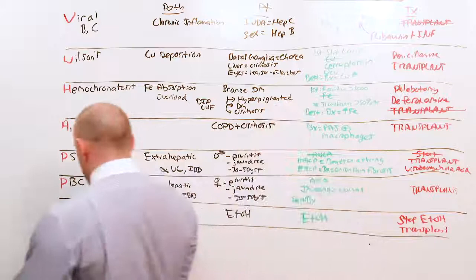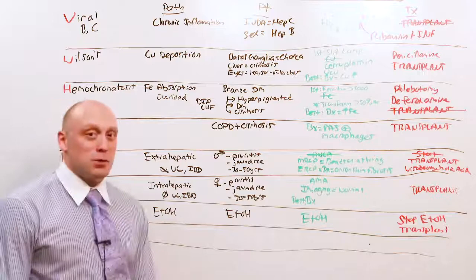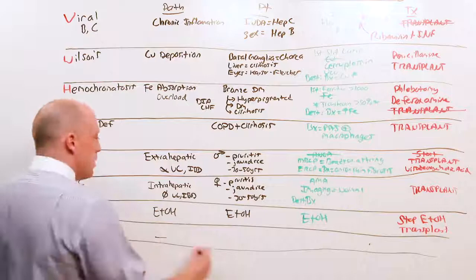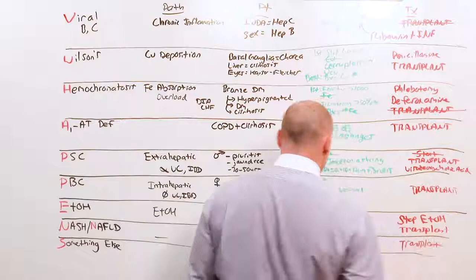And NASH and NAFL are essentially a waste paper basket. Yes, fat people get fatty livers. But NASH is really the thing that says, well, they have cirrhosis and they don't have any of these other things. So, NASH. They didn't do anything. There's no history. Everything else is negative. And they have cirrhosis anyway, so you need to transplant them.